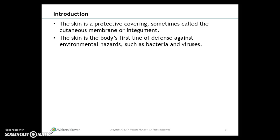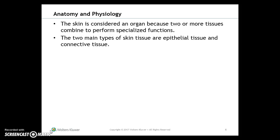The integumentary system includes the skin and its accessory structures. This chapter covers the anatomy and physiology of the skin, word parts, and all the things we discussed. The skin is considered an organ because two or more tissues combine to perform specialized functions — specifically, epithelial tissue and connective tissue are the two main types that make up the skin.